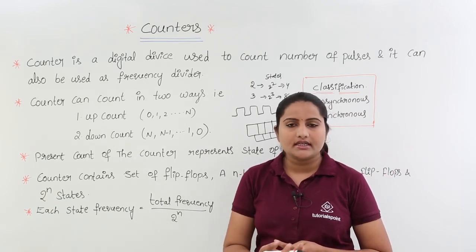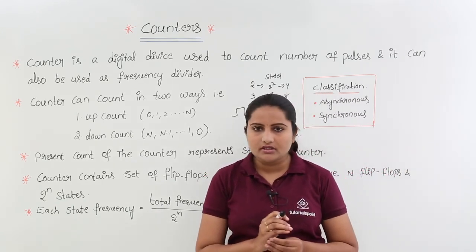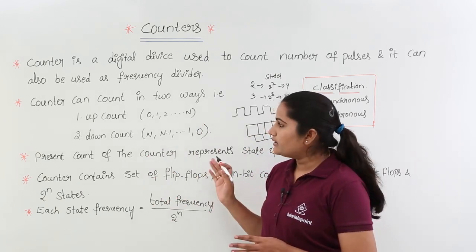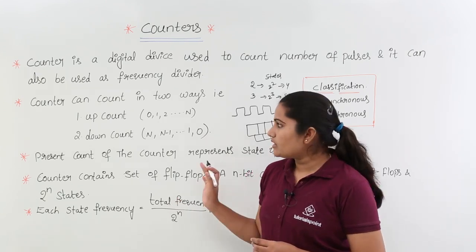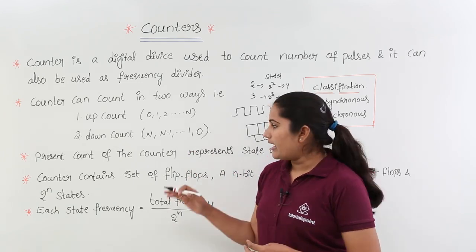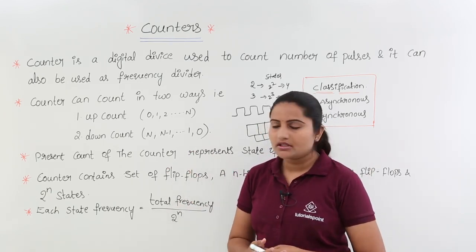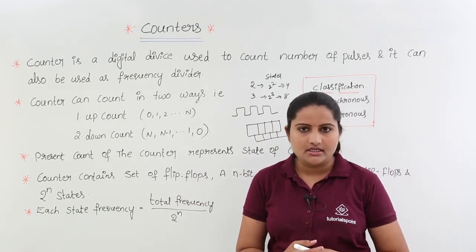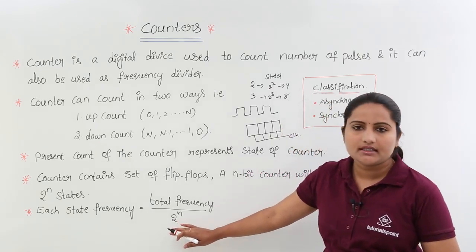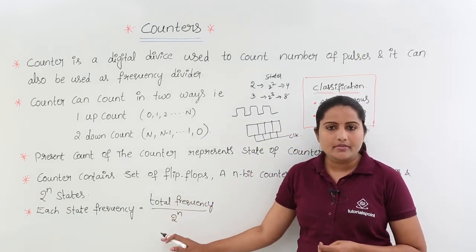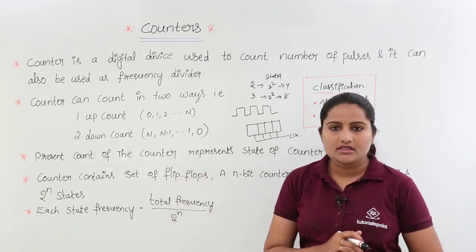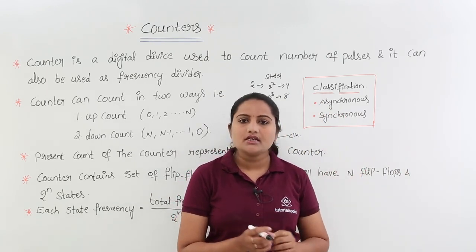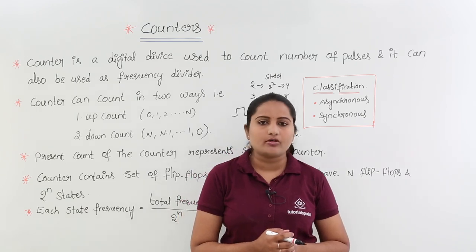To summarize: a counter counts the number of clock pulses and is also used as a frequency divider — it divides total frequency by each state. A counter can count in an upward or downward direction. The present count of the counter is the state of the counter. An n-bit counter requires n flip flops and has 2 power n states. Each state frequency equals total frequency divided by number of states. Counters are classified as asynchronous (different clock pulse per flip flop) or synchronous (same clock pulse for all flip flops).